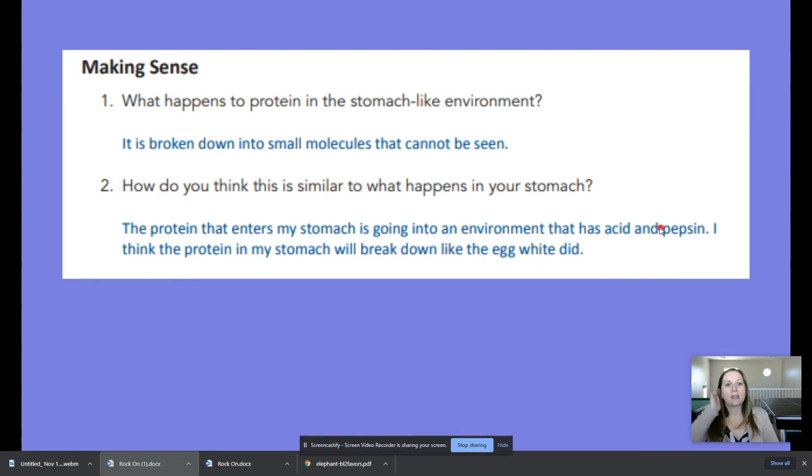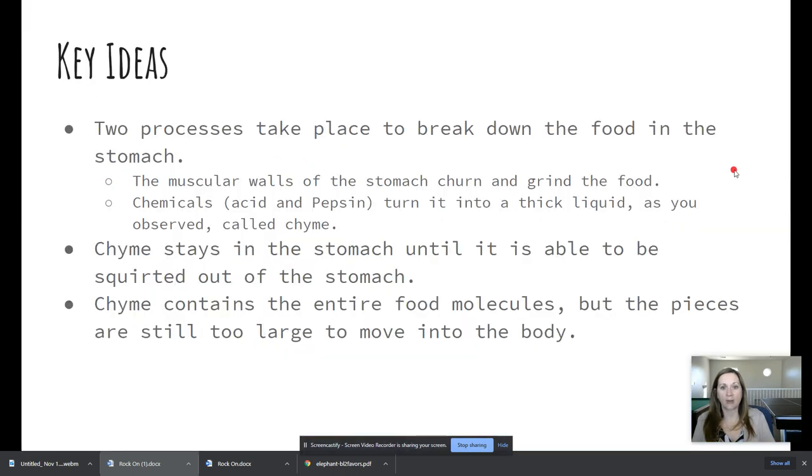So what happens to protein in the stomach-like environment? It is broken down into small molecules that cannot be seen. And how do you think this is similar to what happens in your stomach? Well, the protein that enters my stomach is going into an environment that has acid and pepsin. And I think the protein in my stomach will break down like the egg white did. So that's what's happening in your stomach. And like she said, your stomach is churning and it's going to happen faster in there because of that.